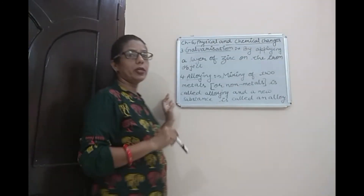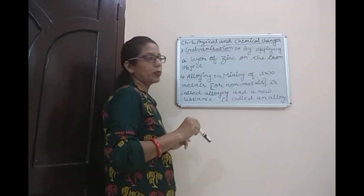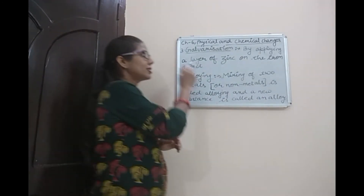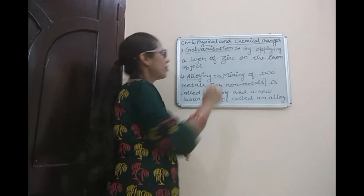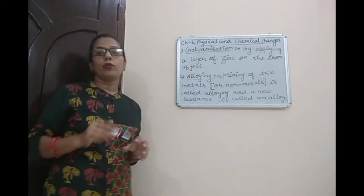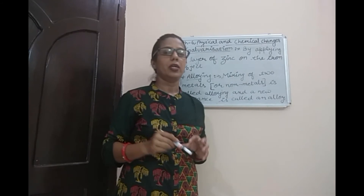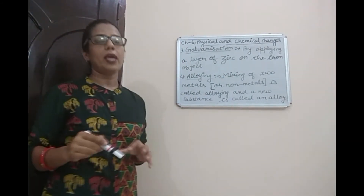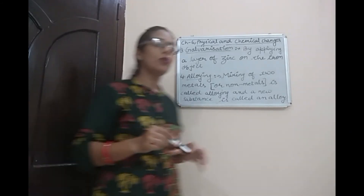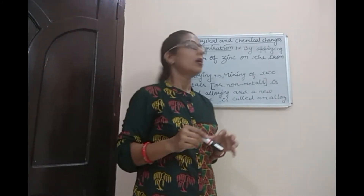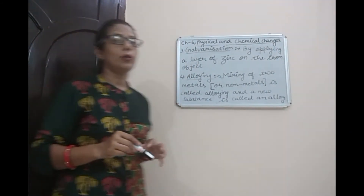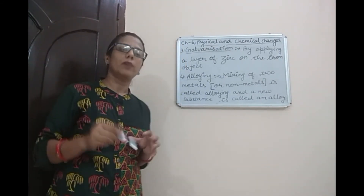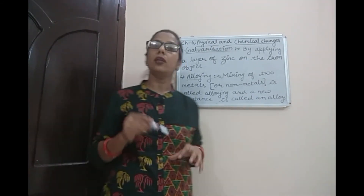The third method to prevent rusting is galvanization. When we apply a layer of zinc on an iron object, this process is known as galvanization. By applying a layer of zinc, we can prevent rusting because this layer does not allow the iron object to come in contact with air and water.